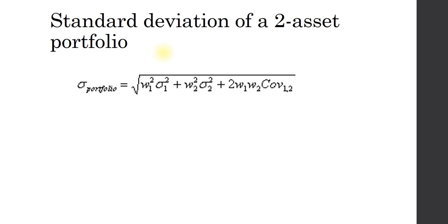In calculating the standard deviation of a two-asset portfolio, we first need to look at the formula. For those of you taking this investments class or sitting for the CFP exam, this formula is provided. It tells us what the standard deviation of a two-asset portfolio is by taking the weighted average of each individual standard deviation and then considering the covariance, or how those two asset standard deviations move together.